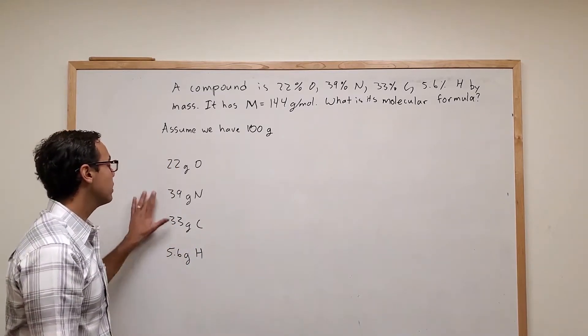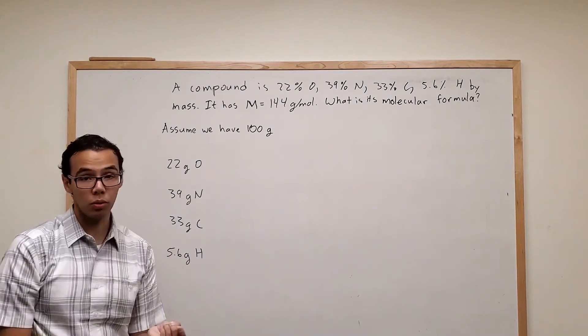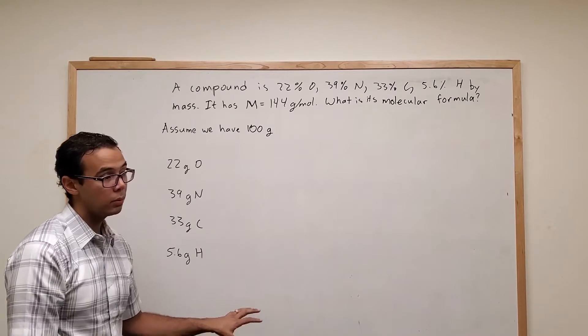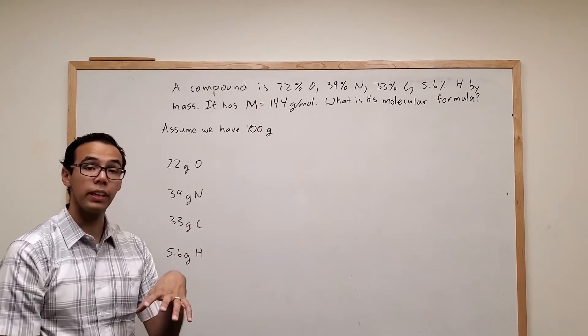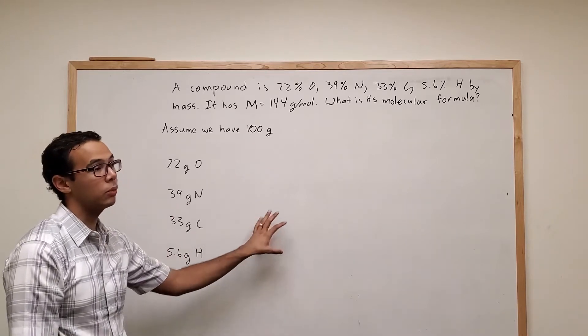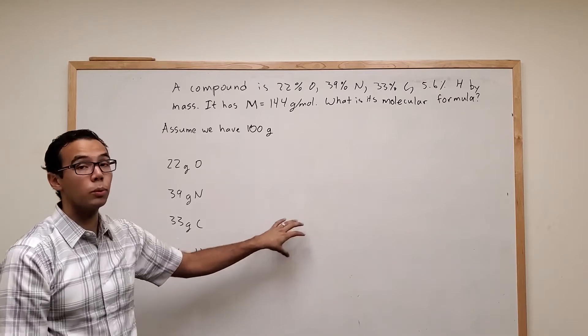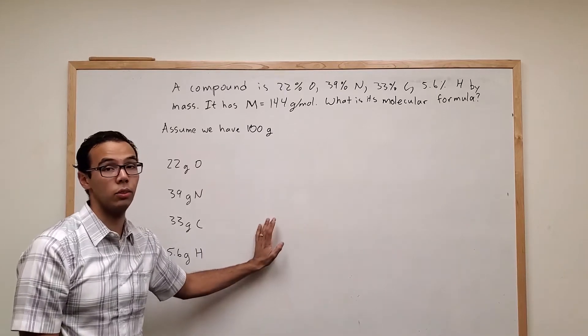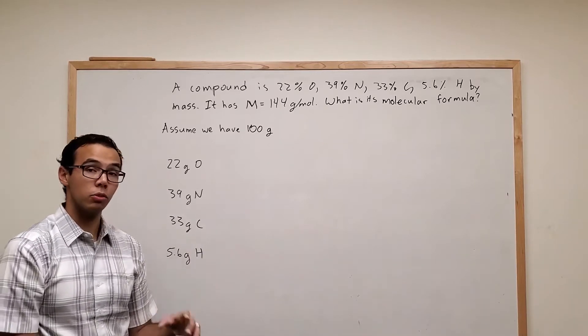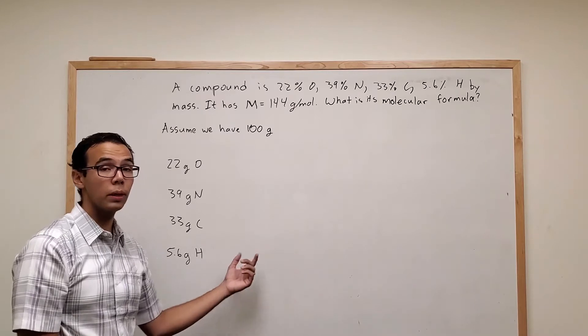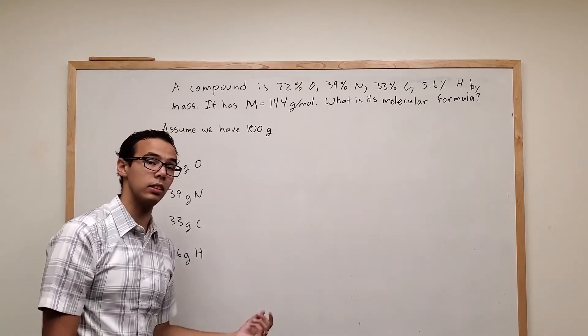So the next step, we're going to take these different masses of our elements and turn them into moles. The reason we want to go into moles is because that will allow us to look at the relationship within the molecule. So if you remember when we looked at sodium chloride, for every one mole of sodium there's going to be one mole of chlorine. Because for every one atom of sodium there's only one atom of chlorine. But that's not necessarily true in terms of grams. Because sodium weighs so much less than chlorine, one gram of sodium is going to be a larger mass of chlorine because there's a difference in their atomic mass.